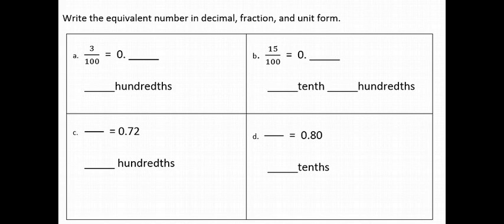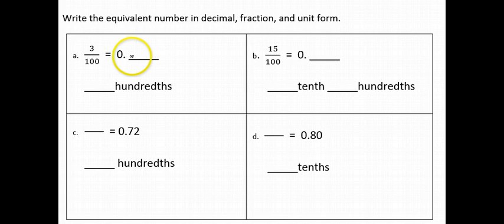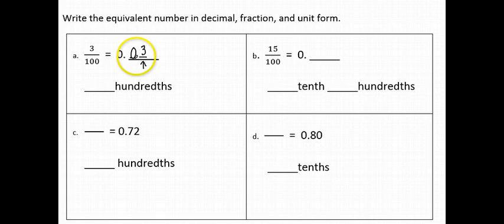Let's look at one more section. The directions say to write the equivalent number in decimal, fraction, and unit form. My first fraction is 3 hundredths. In order to write 3 in my hundredths spot on a decimal, I have to make sure that it lands in the second spot — that's the hundredths spot. I can't leave the tenths spot blank; I have to put a 0 there as a placeholder. So 3 hundredths as a decimal would be 0.03. In unit form, we would just say 3 hundredths — unit form is telling me how many hundredths I have.